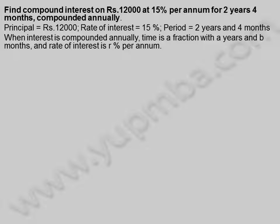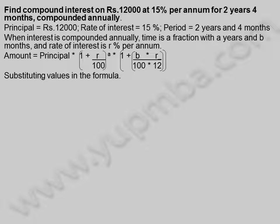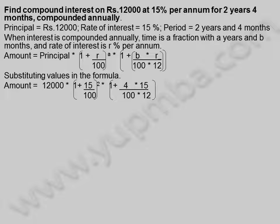When interest is compounded annually and time is a fraction with A years and B months, and rate of interest is A% per annum, the amount formula is: Amount = Principal × (1 + R/100)^A × (1 + B×R / (100×12)).